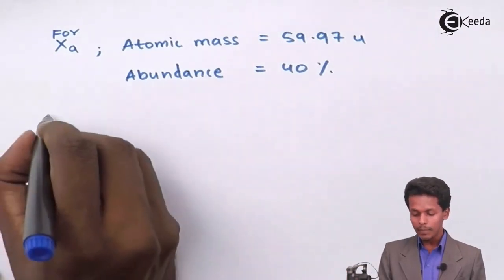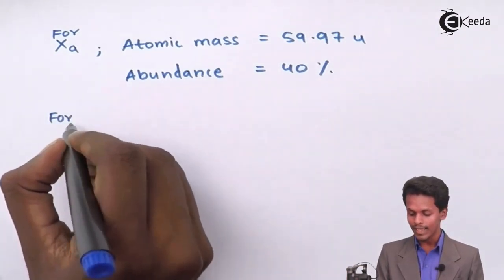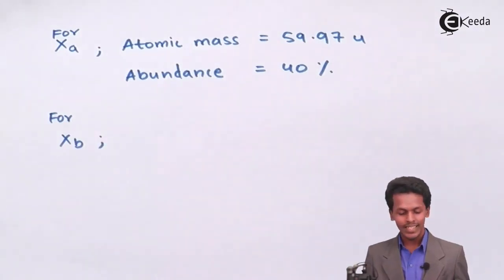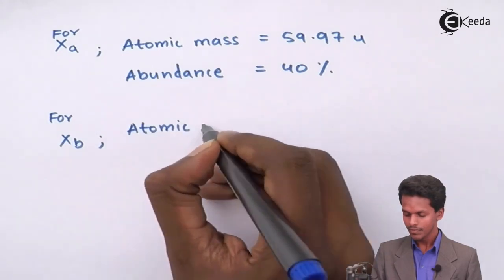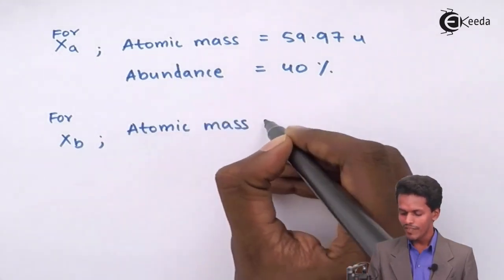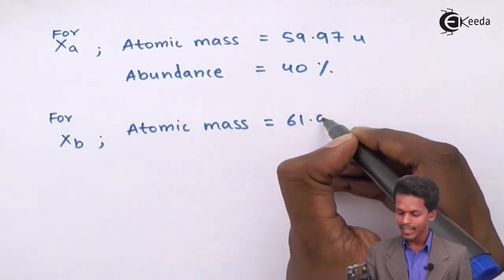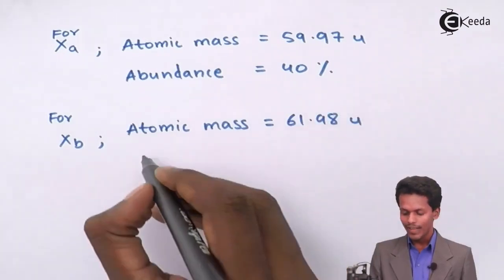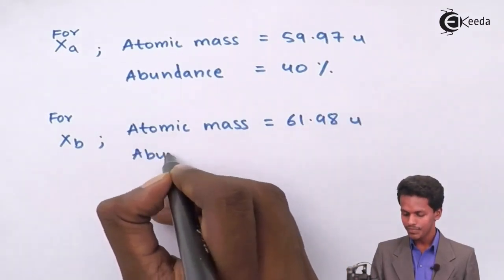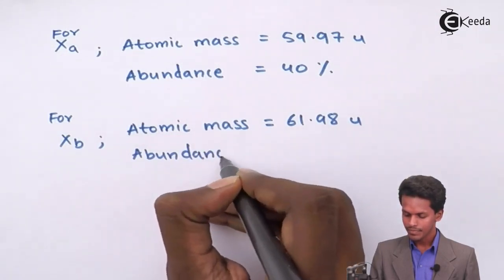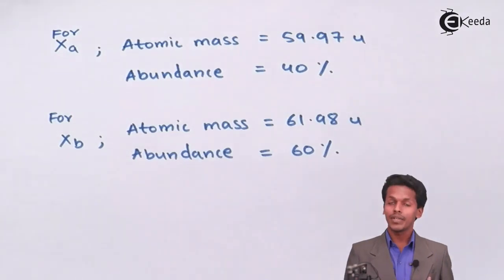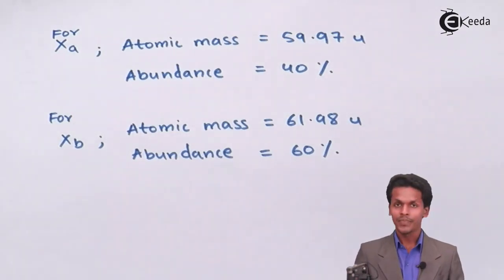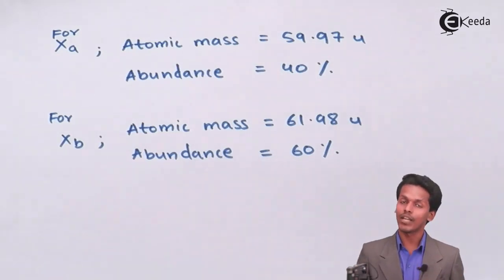For the other isotope XB, the atomic mass provided is 61.98 unified mass and the abundance is 60%. These are the data we have from the question, and now it's simple to understand how we can calculate the average atomic mass.